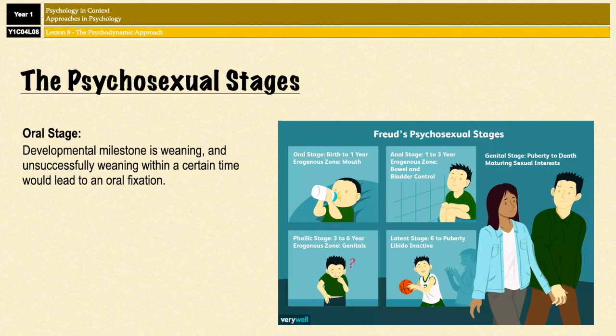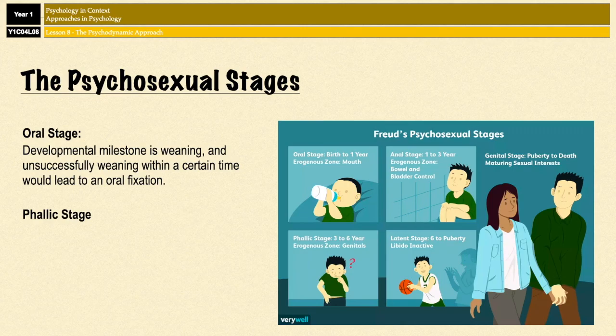There are other stages that are slightly more bizarre. In the phallic stage, which is the third stage, Freud suggests that boys develop incestuous feelings for their mothers, and they also develop a murderous hatred for their fathers, who they consider to be rivals in the love for the mother. That's known as the Oedipus Complex, which makes up a really important part of the psychosexual stages of development.